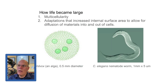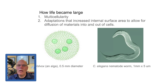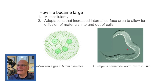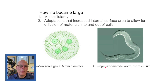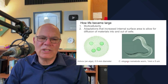So how did life become large? Life became large not by having bigger cells, but by multicellularity and a host of adaptations that increased internal surface area to allow for diffusion of materials in and out. Here we have two multicellular organisms: a volvox, a beautiful kind of algae, and C. elegans, a kind of worm only about one millimeter long but incredibly studied in developmental biology — the whole organism is only about 900 cells.